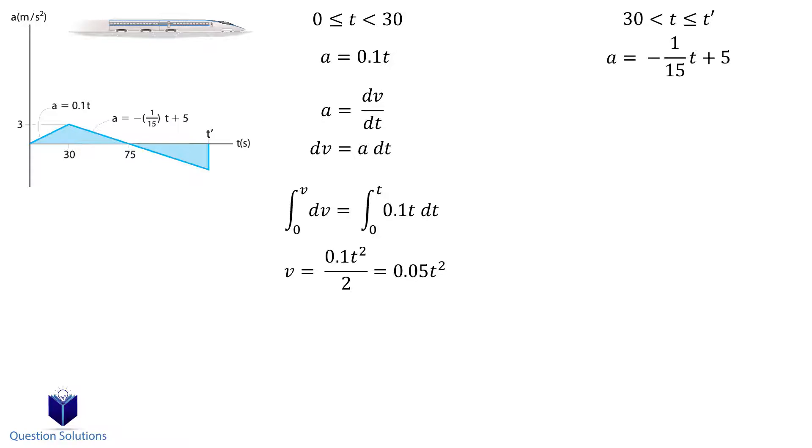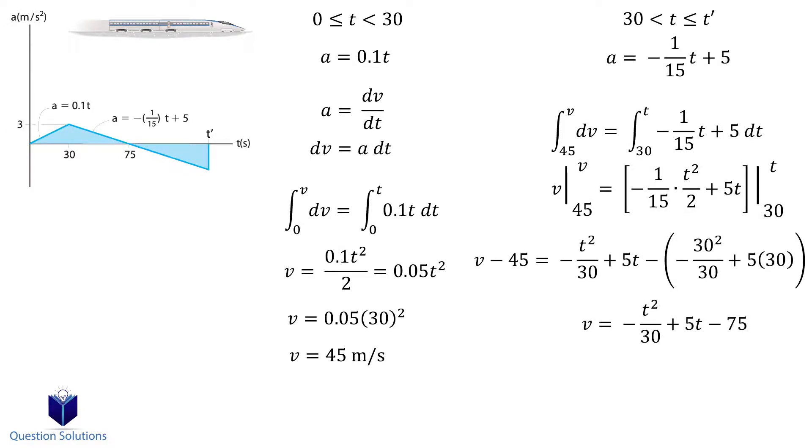Now we need to figure out the velocity at 30 seconds. Let's substitute 30 seconds into our equation and we get 45 meters per second. So that basically says that the train is moving at a speed of 45 meters per second at 30 seconds. We can use this value for the next integral. That will be our lower bound. Remember that our time is now at 30 seconds as well. Solving this integral gives us our velocity equation for the second segment.